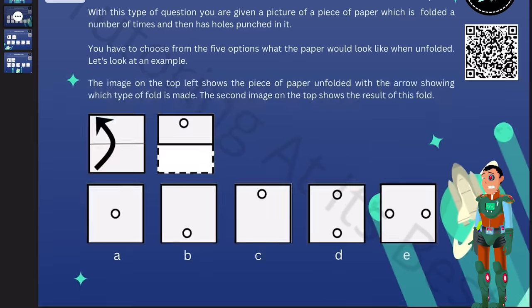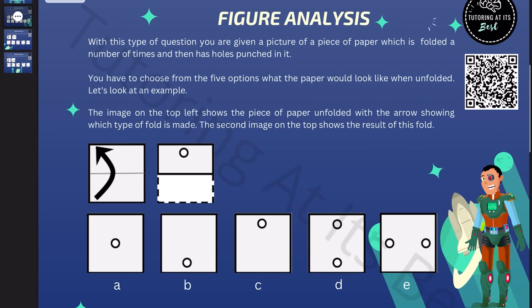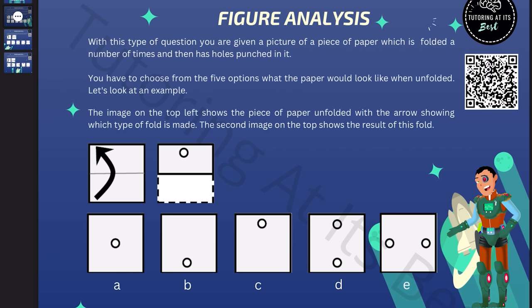So what is figure analysis? Well, in this type of question, we're shown a square piece of paper being folded up in a certain way, which is different for each question, and then has had shapes punched through it. So we have to work out what pattern will be formed by these shapes once the paper has been unfolded.